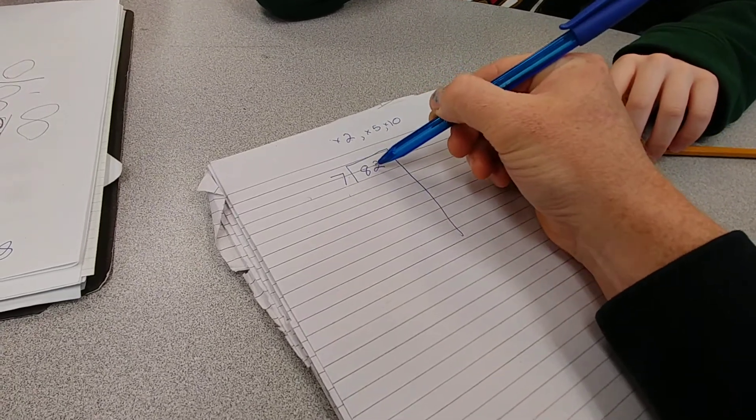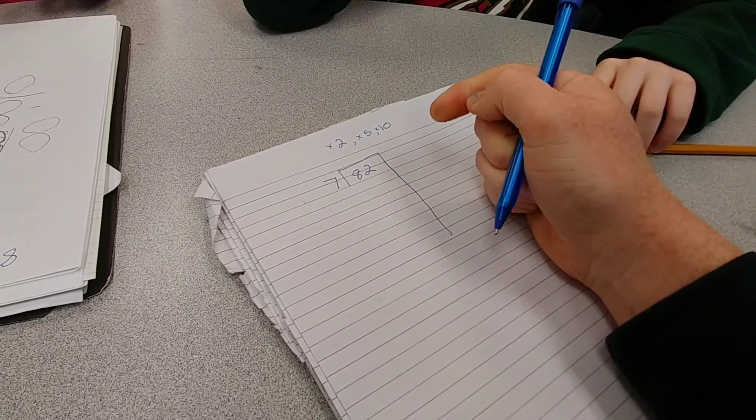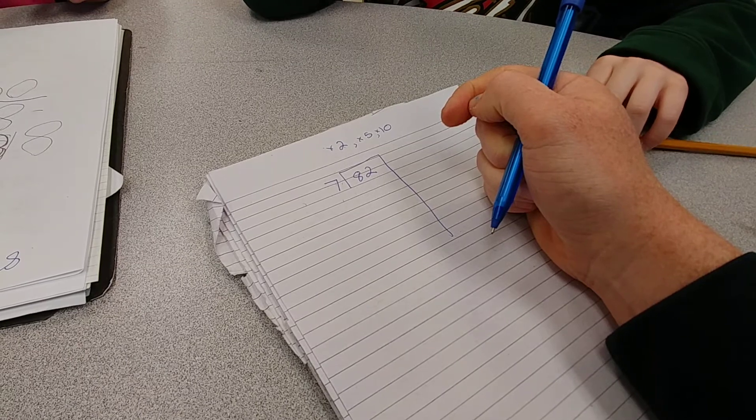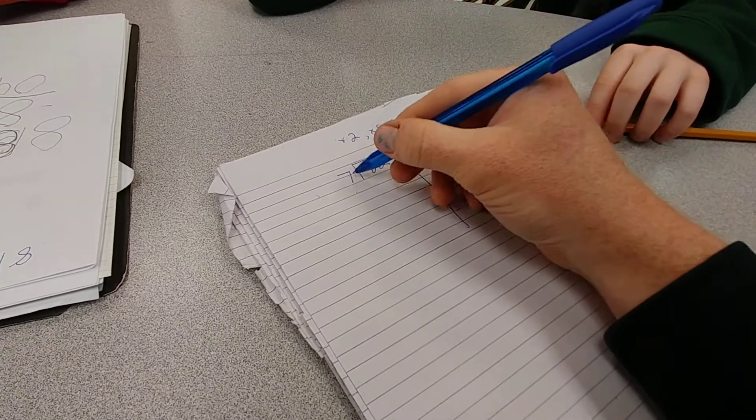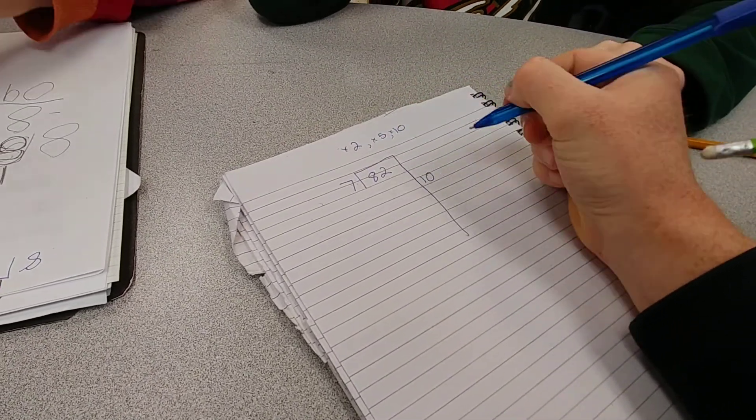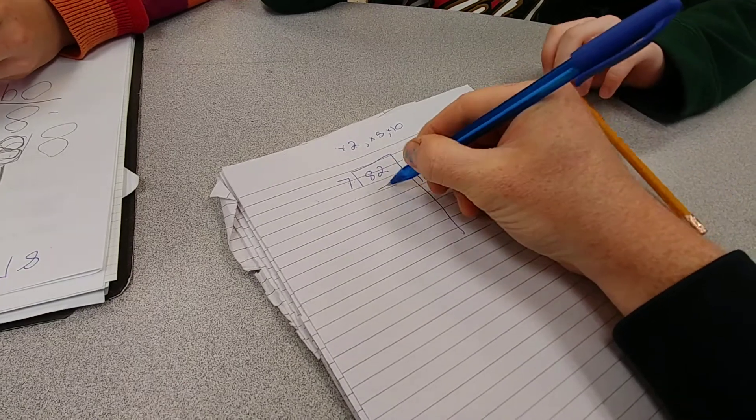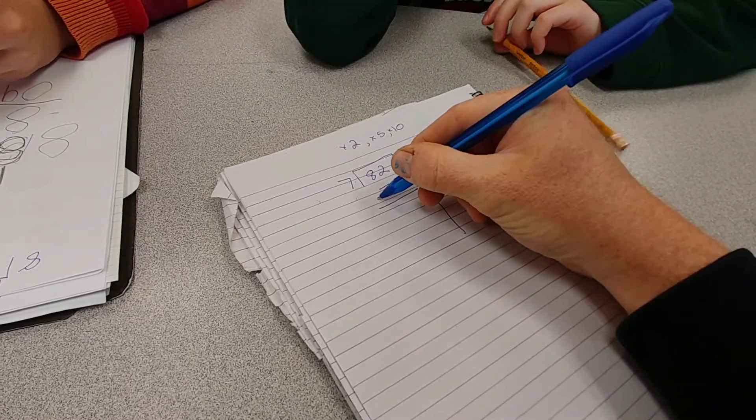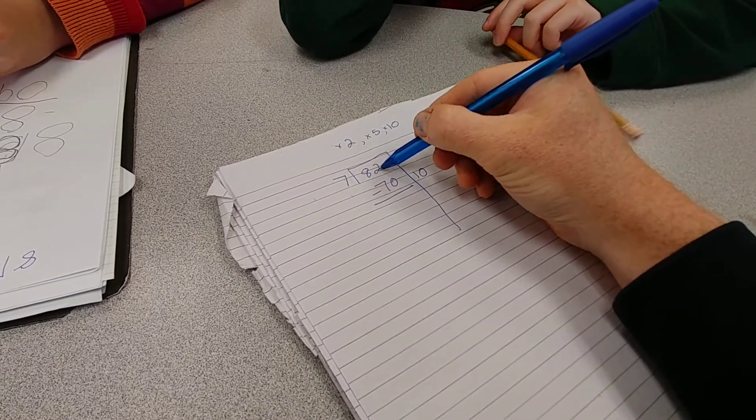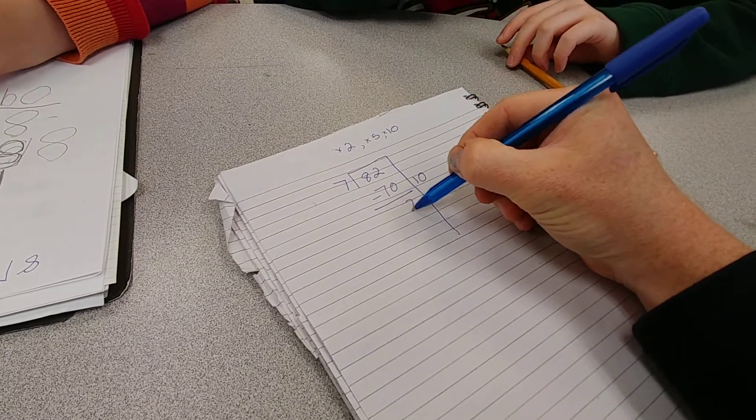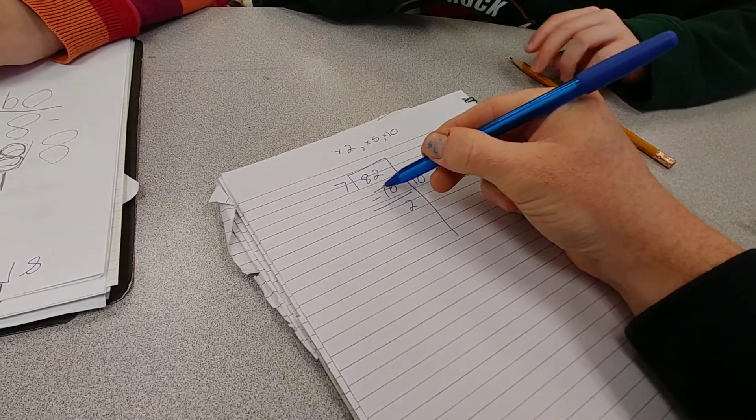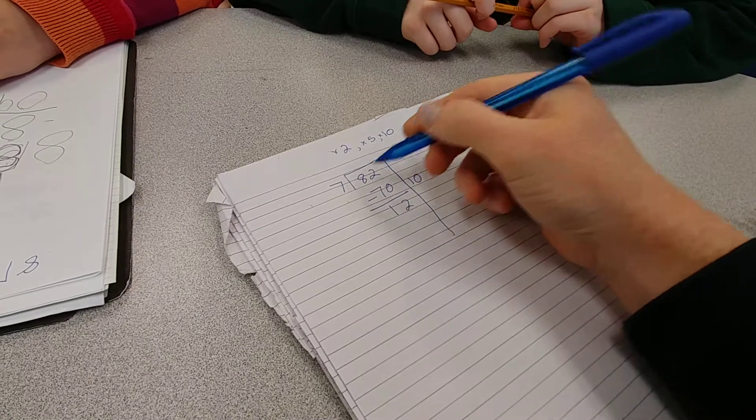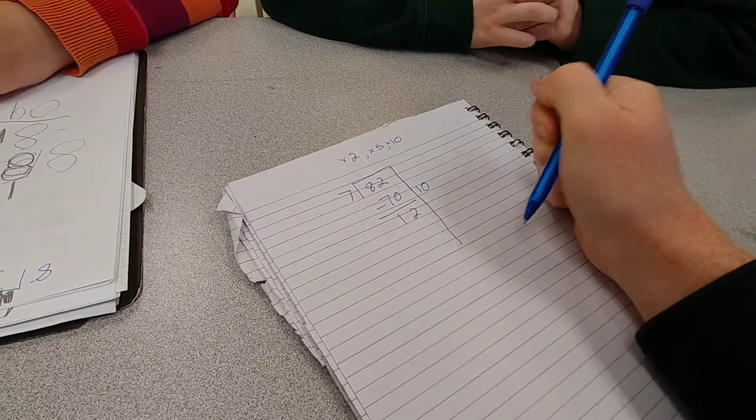Seven times ten is 70. Subtract. Two minus zero is two, eight minus seven is one. How many times can seven go into twelve?